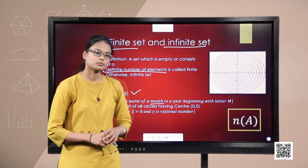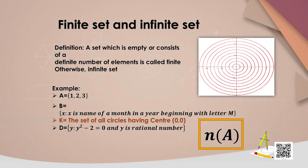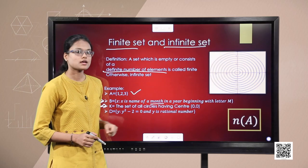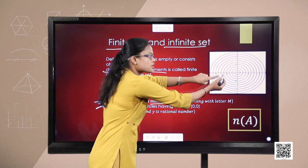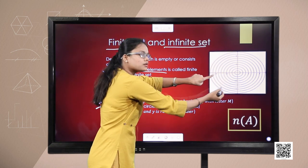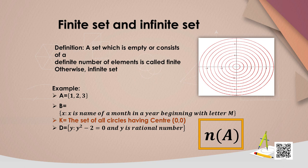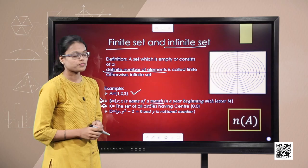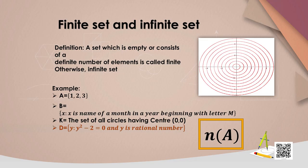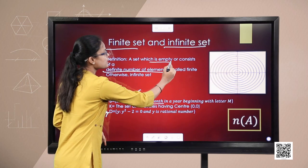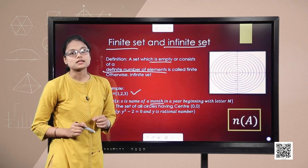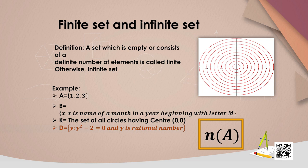Set K is the set of all circles having centre (0, 0). When we change the radius slightly, we always get a new circle centred at (0, 0), so there are infinitely many such circles. Set K is an infinite set. Set D, which we already know is an empty set, is also a finite set according to the definition.